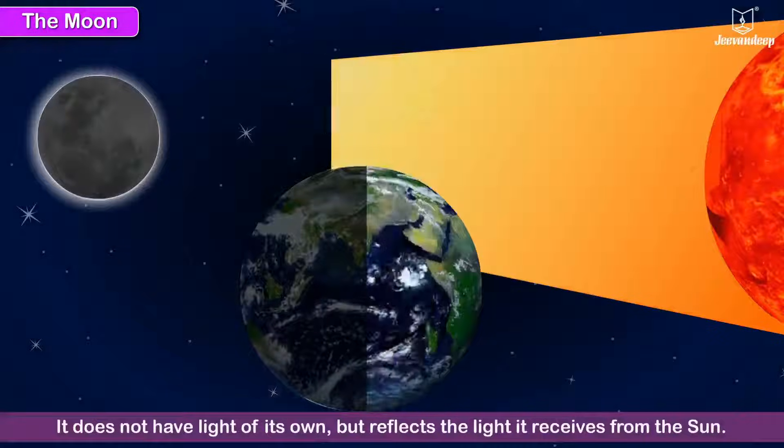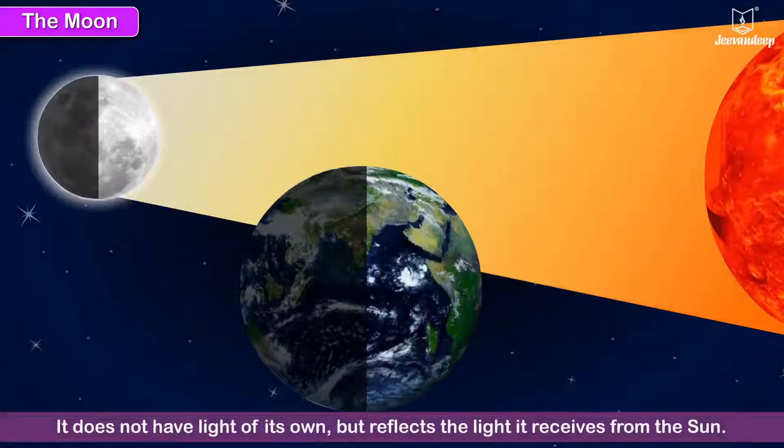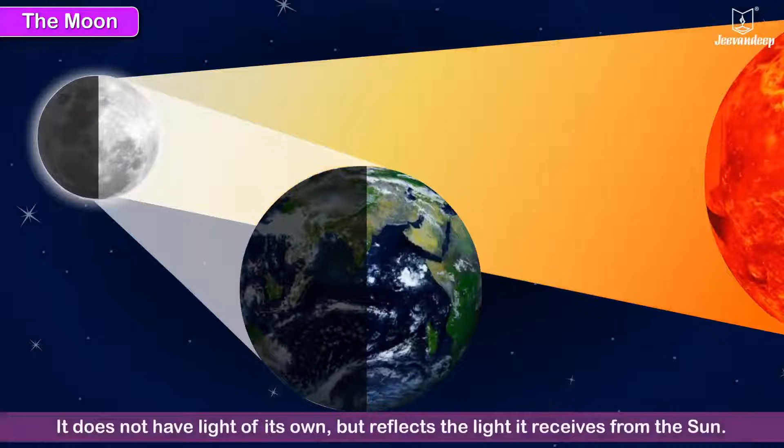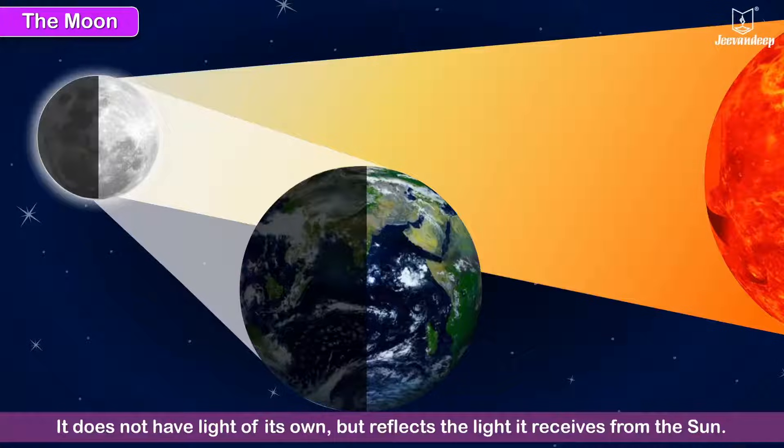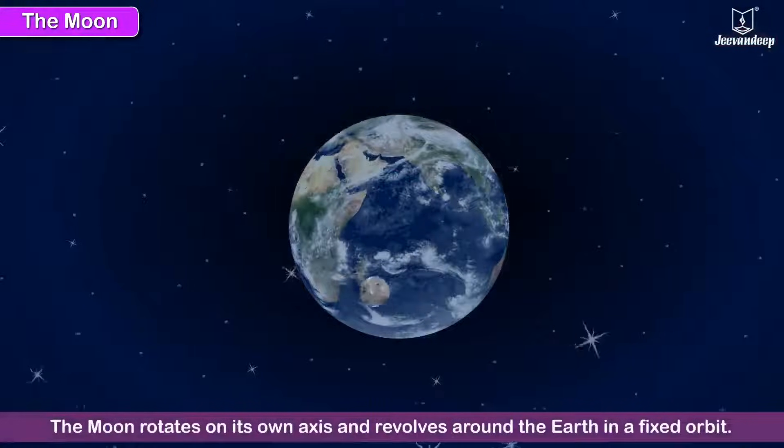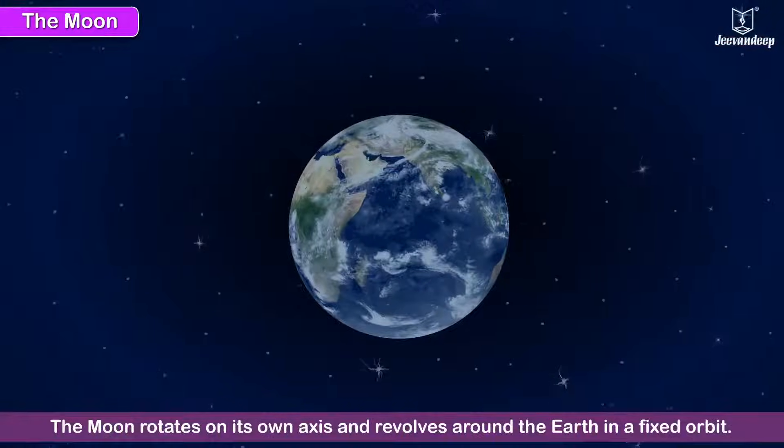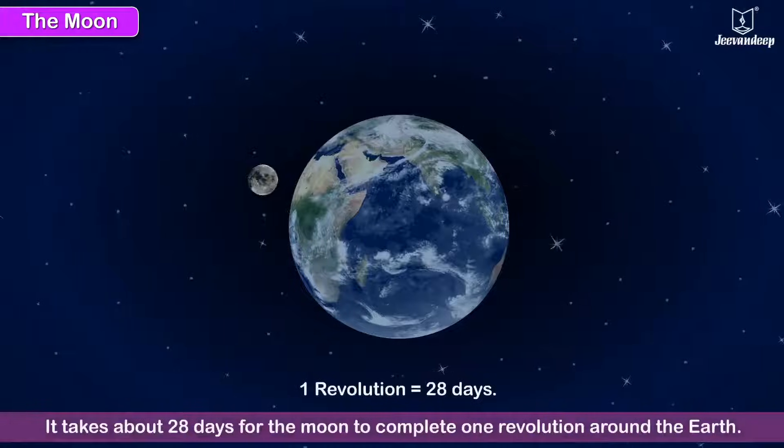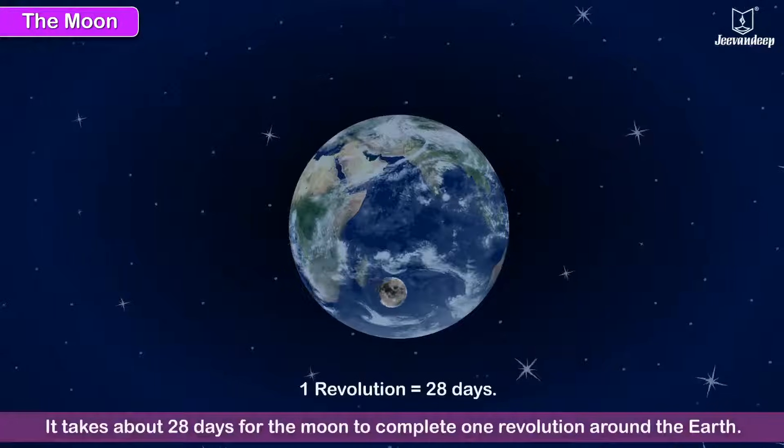It does not have light of its own but reflects the light it receives from the Sun. The Moon rotates on its own axis and revolves around the Earth in a fixed orbit. It takes about 28 days for the Moon to complete one revolution around the Earth.